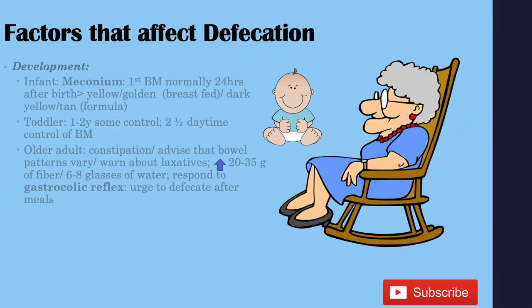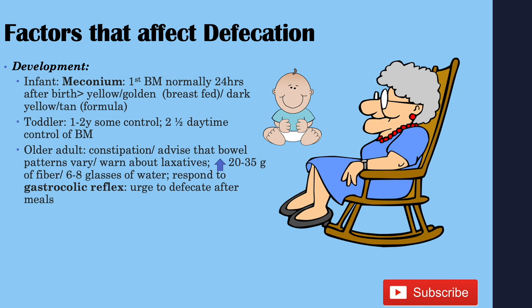Development affects defecation. The first bowel movement an infant has is called the meconium, normally occurring within 24 hours after birth. If an infant is fed breast milk, their feces is normally yellow or golden; if fed formula, it's dark yellow or tan. Toddlers between one and two years old have some control over defecation, and by two and a half, they normally have daytime control over their bowel movements.